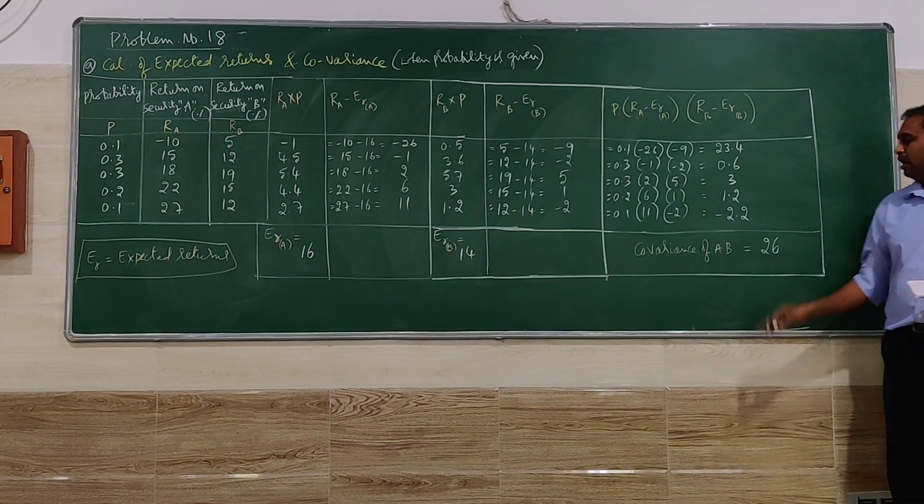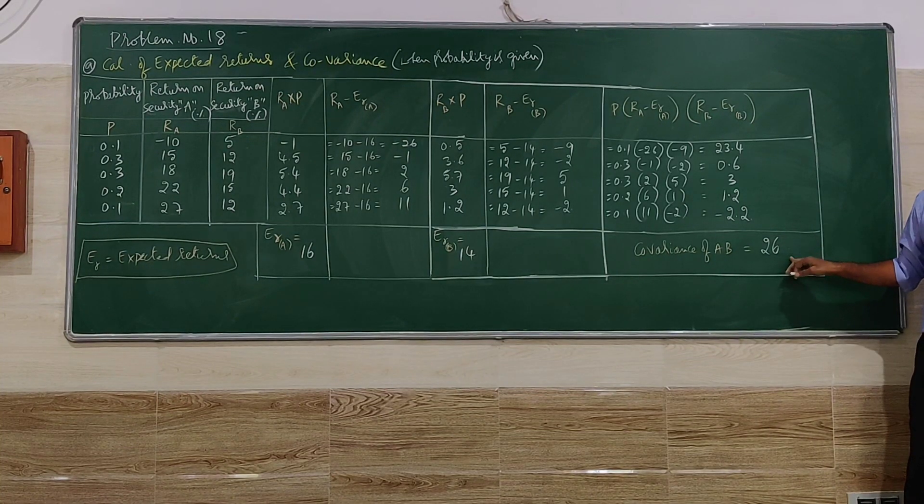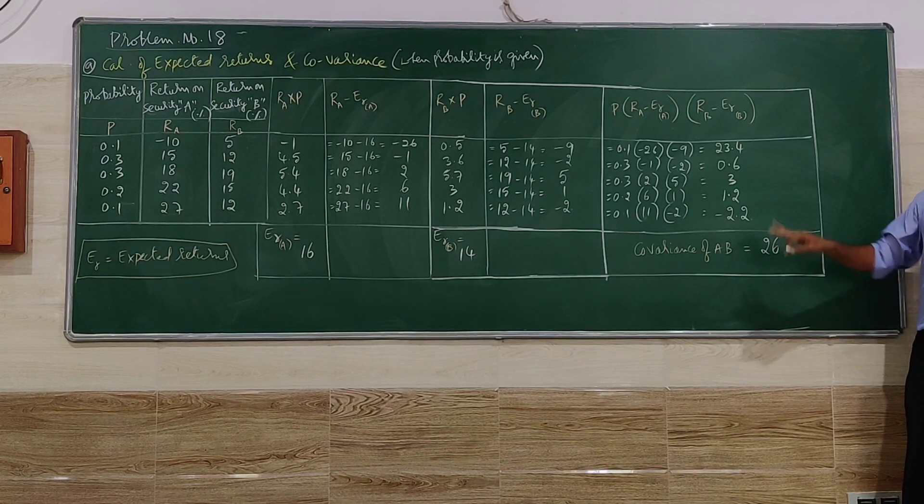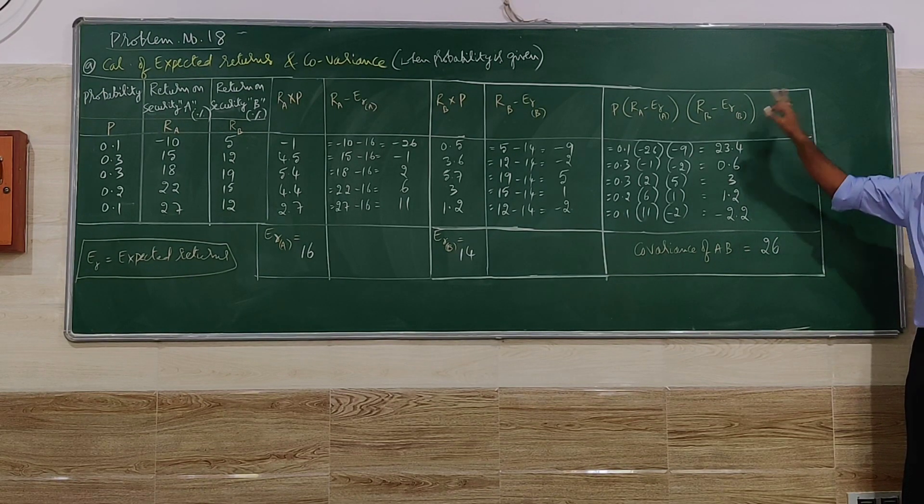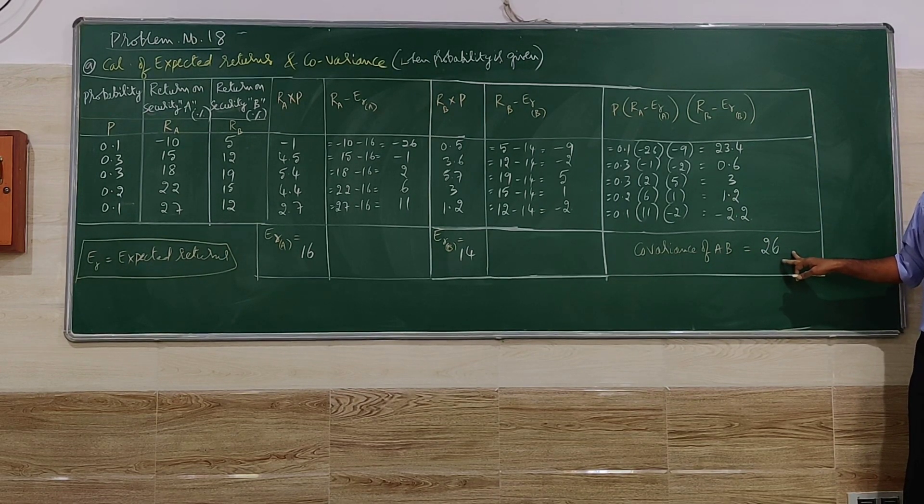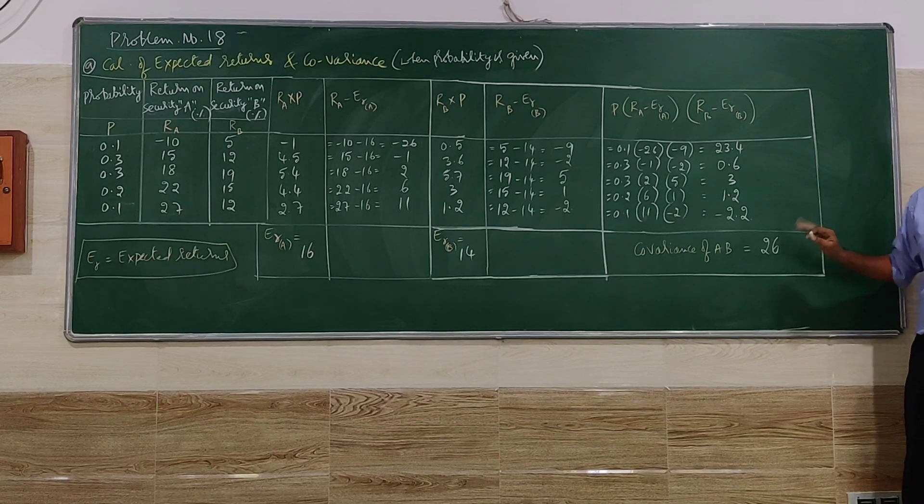You get covariance of A and B as 26. This is the answer for the question. So no further formula is required. If you work like this and write a sentence, covariance of A and B is 26, that is sufficient.